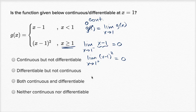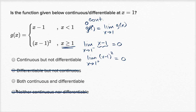So we can rule out all the choices saying it's not continuous — we can rule out those two. Now let's think about whether it is differentiable.